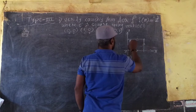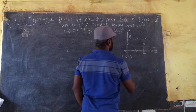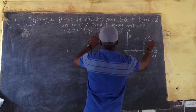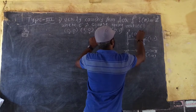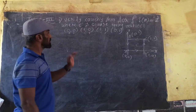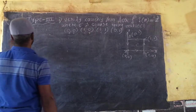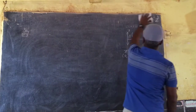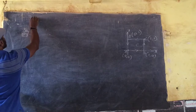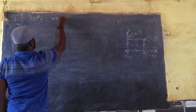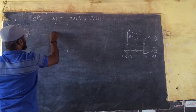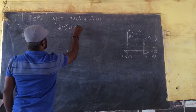So, labeling A, B, C, D: A is (0,0), B is (1,0), C is (1,1), D is (0,1). This is a square. The question: can you verify Cauchy theorem? So what is the formula for Cauchy theorem? We know that Cauchy theorem states: integration of C, F(z) dz is equal to 0.